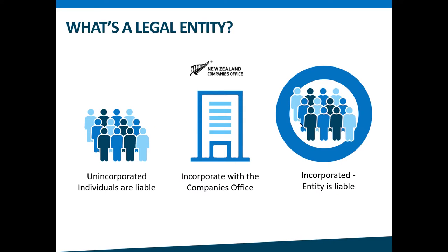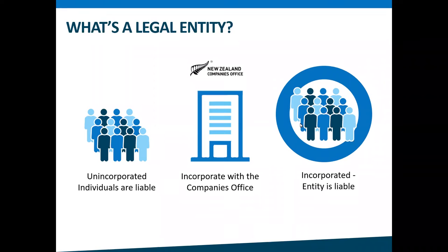Some of the structures we're going to talk about today are considered legal entities. A legal entity is incorporated and this means it is listed on one of the registers that the Companies Office looks after. The Companies Office registers are different from the Charities Register — if your charity is incorporated, it will be listed on both. A legal entity creates a separate body from the people involved in it, meaning the organization is usually liable for the actions of the group and the people involved are not. One way to think about this is like a cloak of legal protection that shifts the responsibility from the individual to the legal entity.